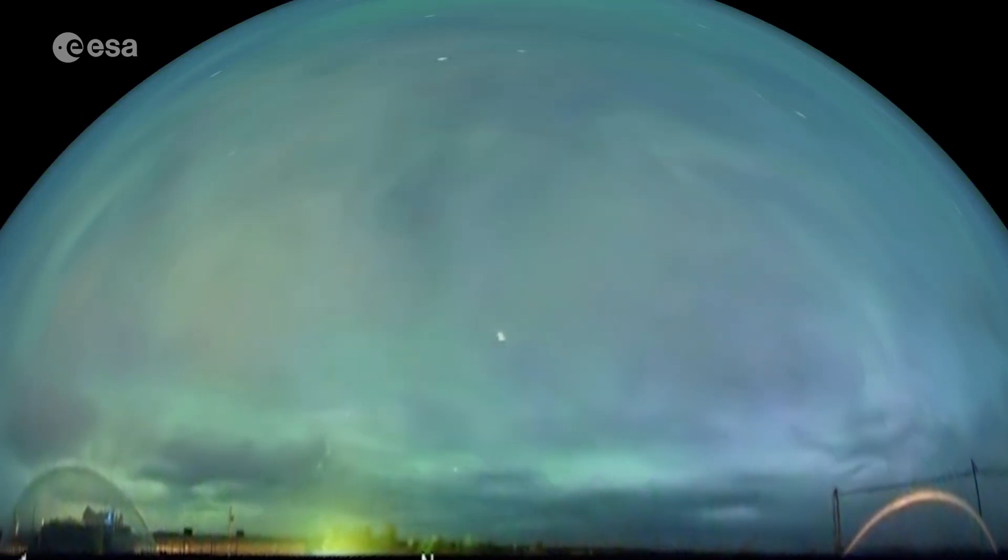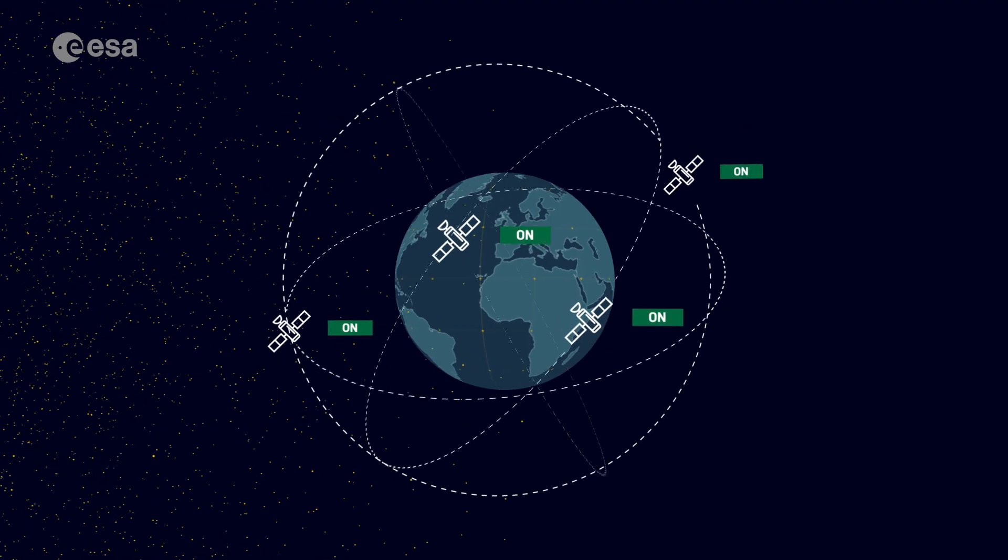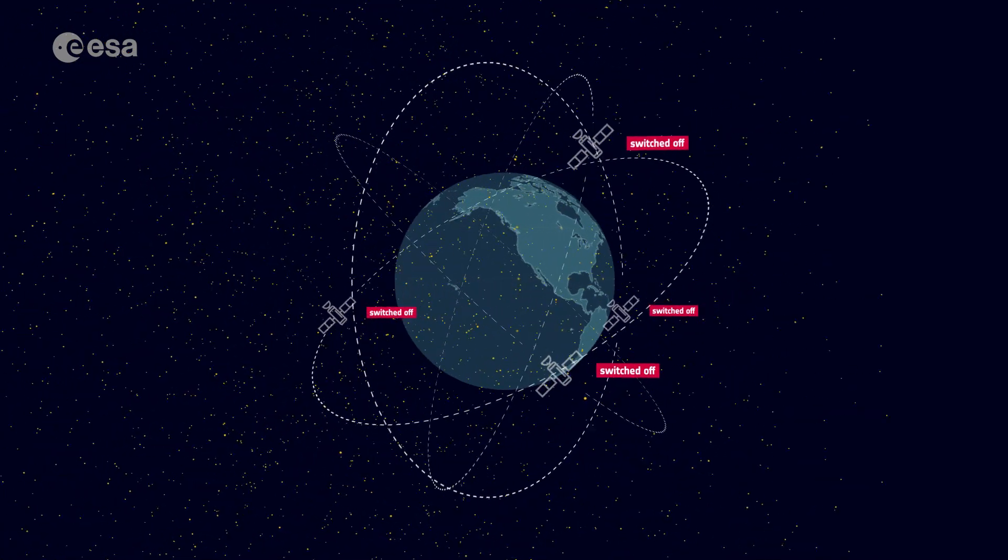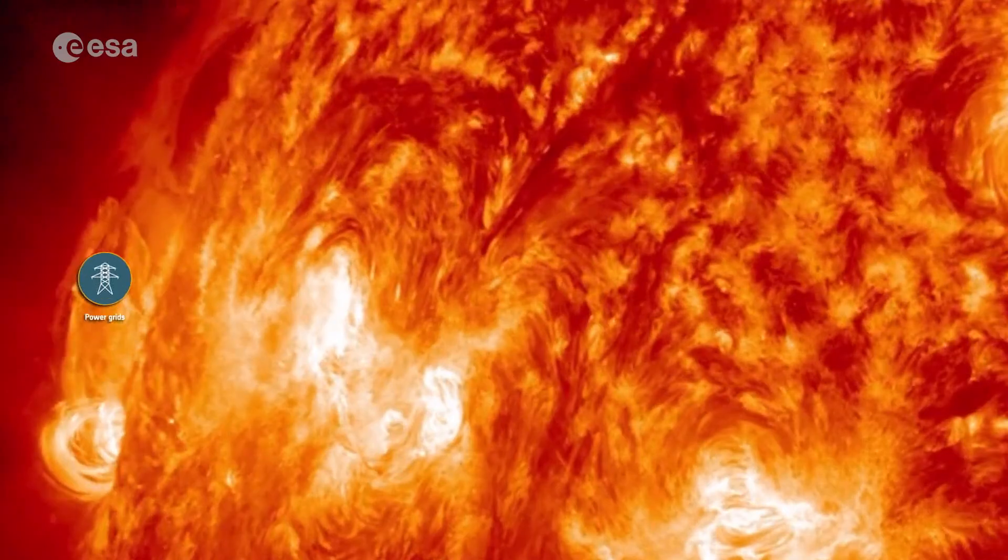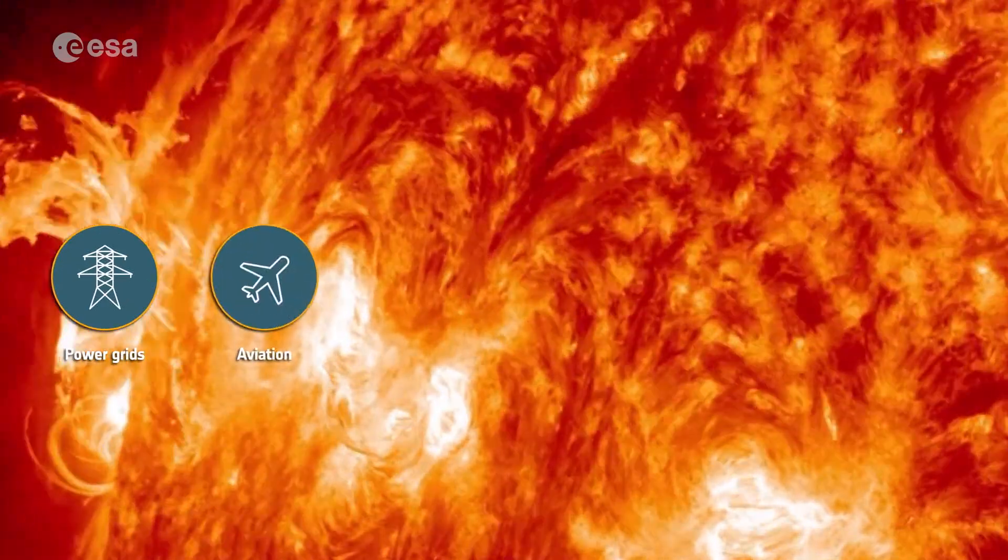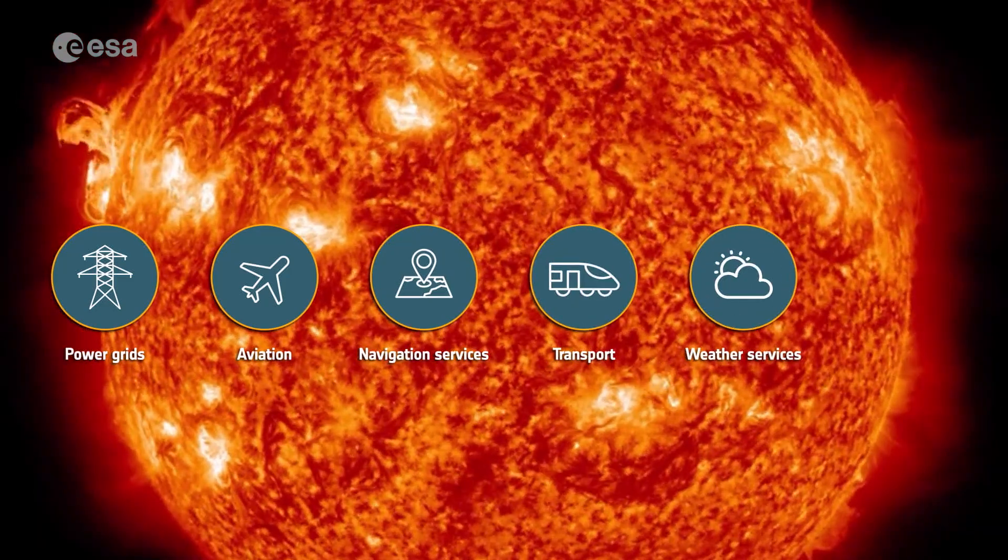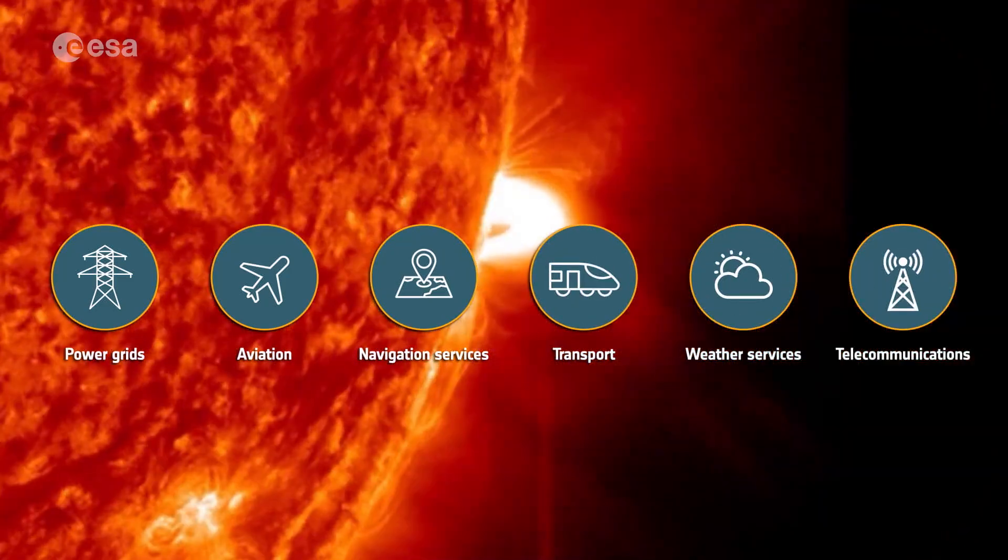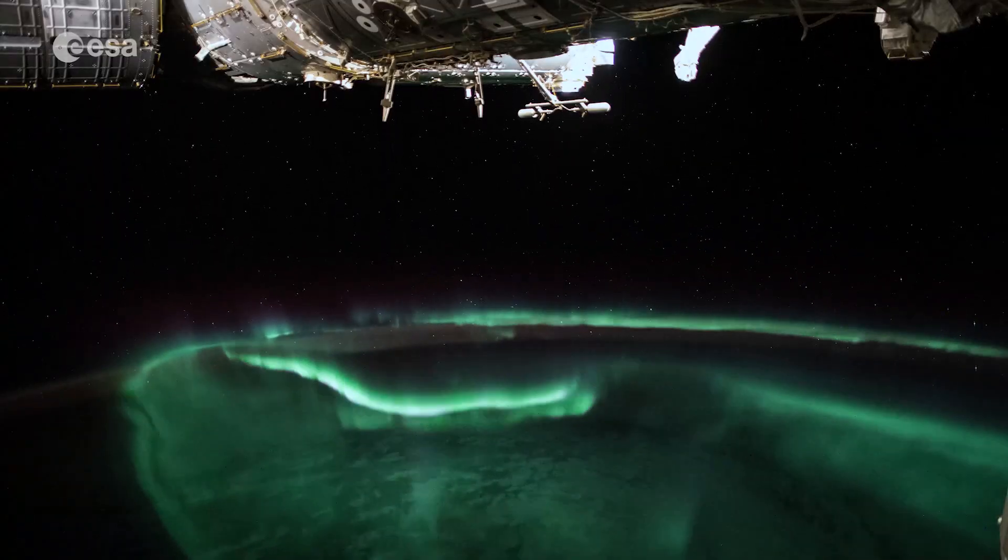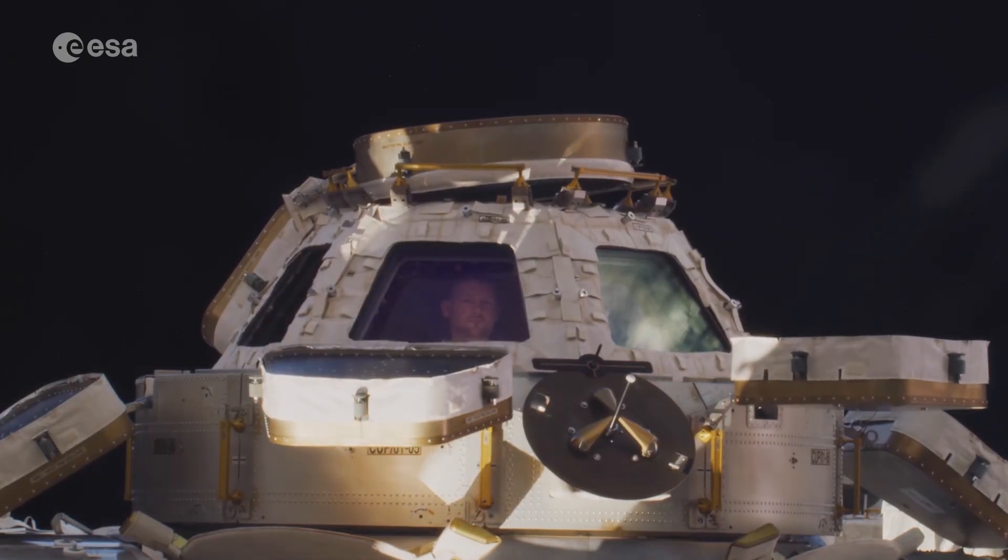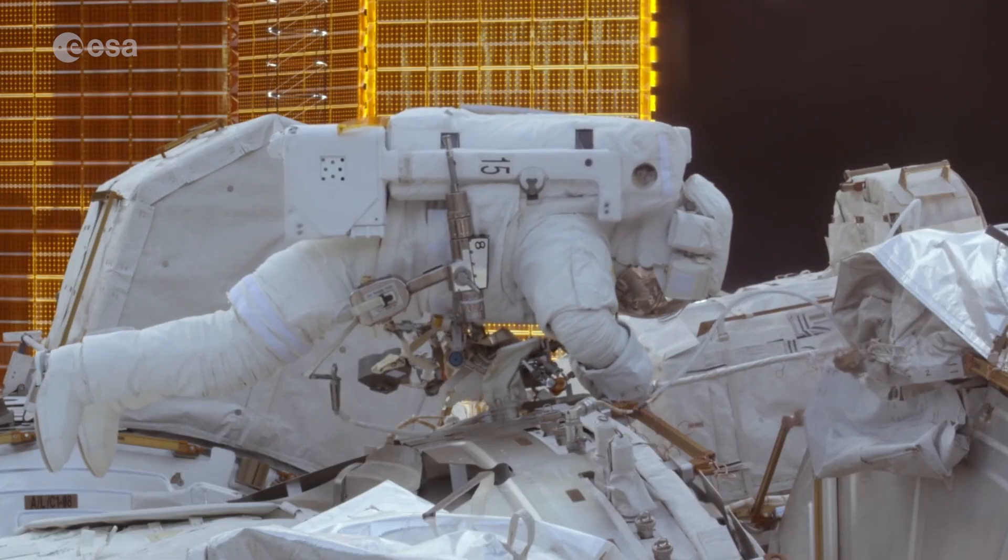When coronal mass ejections strike, they can cause major disturbances to our way of life, disturbing and damaging satellite operations, power grids, aviation, navigation services, transport, weather services and telecommunications. Solar storms even pose a radiation risk, threatening astronauts in orbit and air crews flying over the poles.